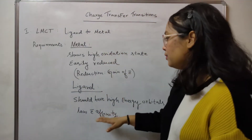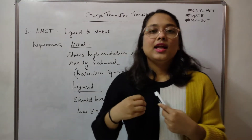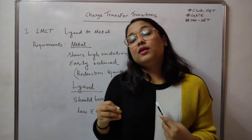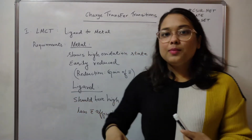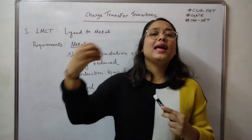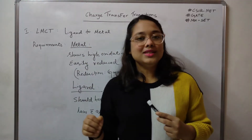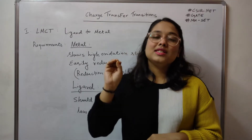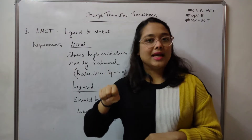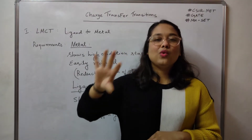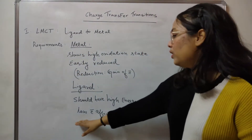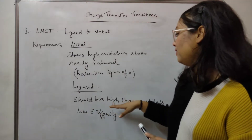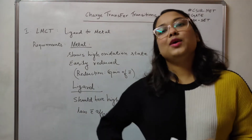For the ligand requirement of low electron affinity: electron affinity is essentially 'liking' of electrons. Since the ligand is donating electrons to the metal, it should not hold on to those electrons tightly. Low electron affinity means it can easily donate those electrons. You can also say low electronegativity — elements with high electronegativity hold electrons tightly, whereas those with low electronegativity donate them easily.